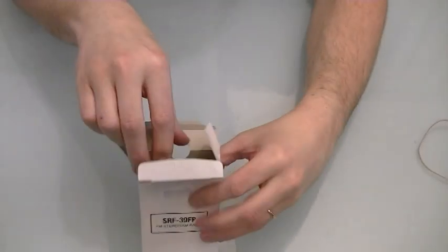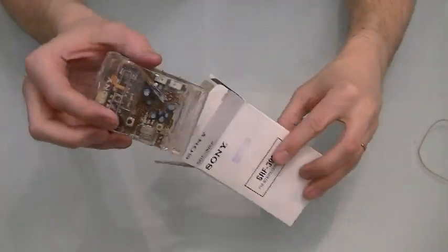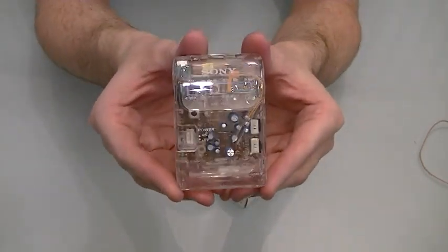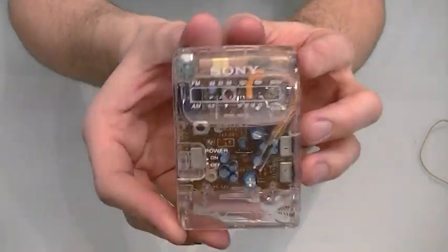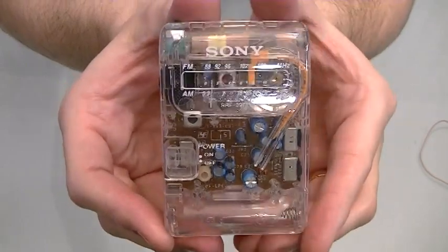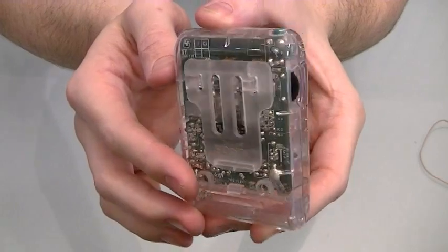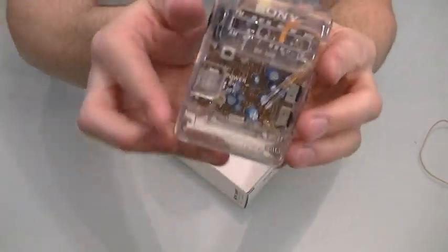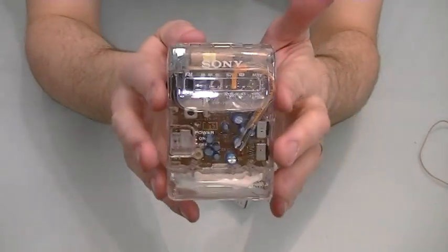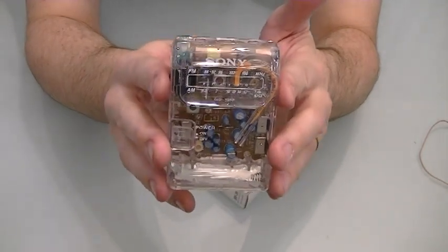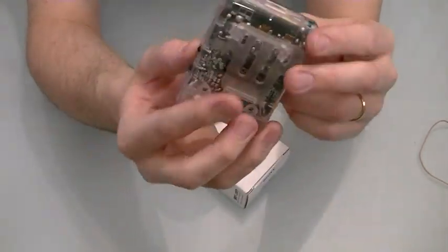All right and let's have a look at the unit itself. There we go the SRF-39FP. Now of course you'll notice that it is completely transparent. Now the reason for this is because this way contraband can't be snuck inside of prison or can't be moved around or sold. So you can see everything.